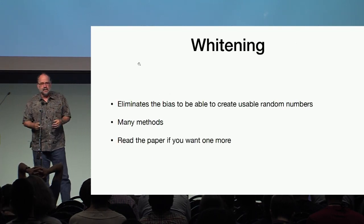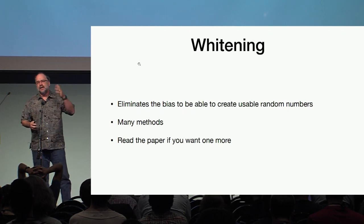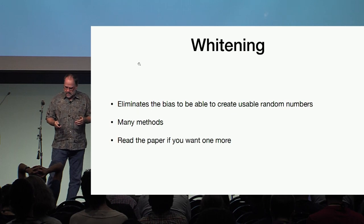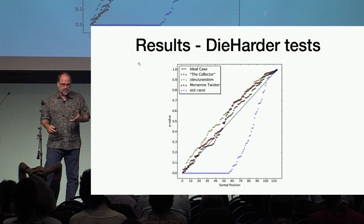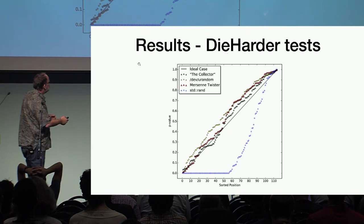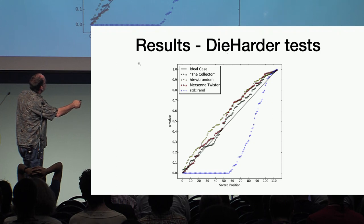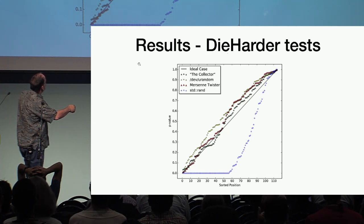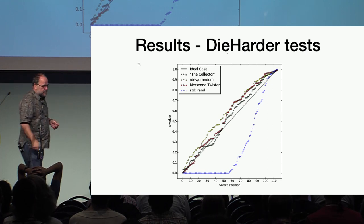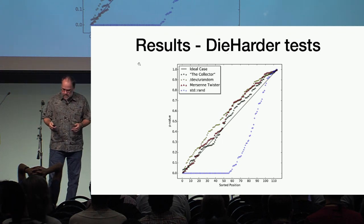We were able to whiten it using one of many methods — in the paper we present yet one more method. We then validated the result using the Dieharder test, a standard random number generator benchmark. The line closest to the diagonal is our random number generator. Shown for comparison are the bad Unix random number generator, the better blocking Unix random number generator, and the Mersenne Twister, which is considered one of the best. We consider our results to be very good.